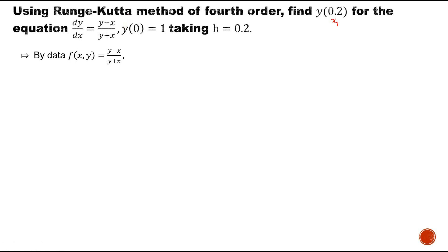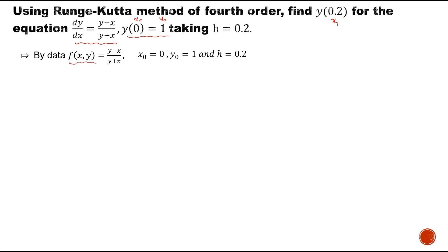According to the given ordinary differential equation, denote this function as f(x, y). With the initial condition y(x₀) = y₀, x₀ = 0 and y₀ = 1, with step size h = 0.2. Adding 0.2 and 0, I need to find y(0.2) using the RK method.